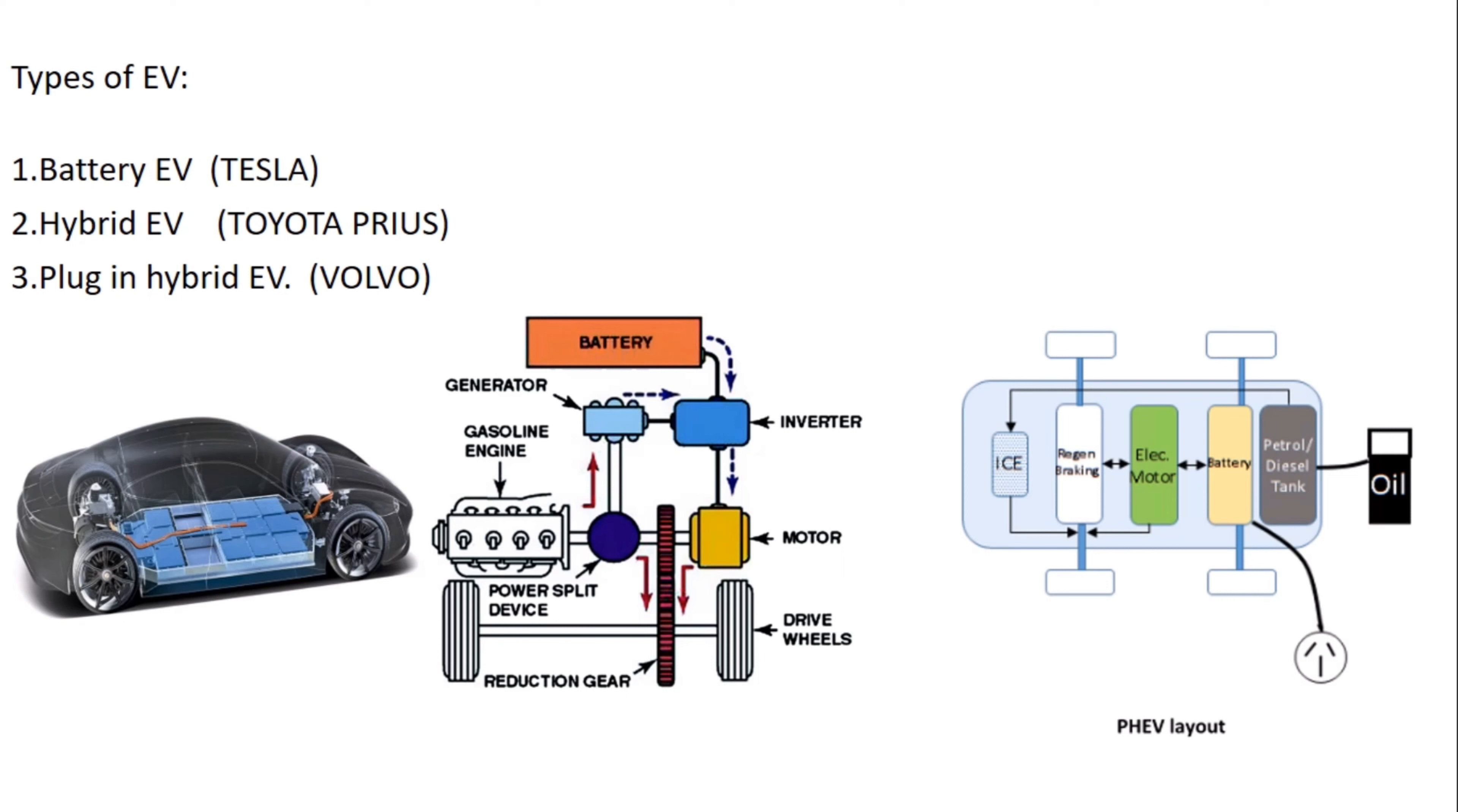For the plug-in hybrid EV, some companies like Volvo, Porsche, and Audi have this mechanism. And for hybrid EV, one of the best examples I can explain is Toyota Prius, which is the most common in the market.